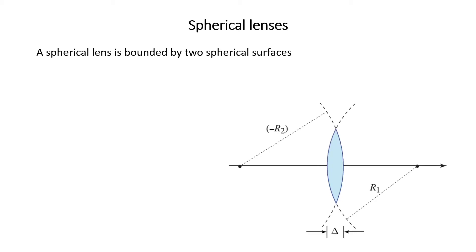Now we discuss spherical lenses. A spherical lens is bounded by two spherical surfaces, as you see here. It is defined by two radii of curvature, R1 and R2.